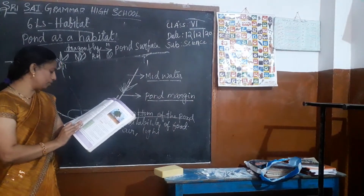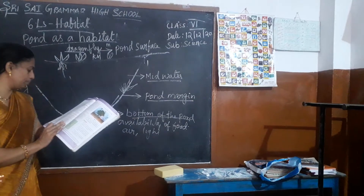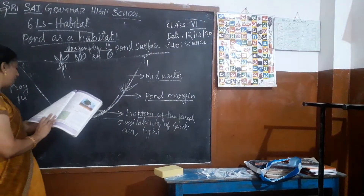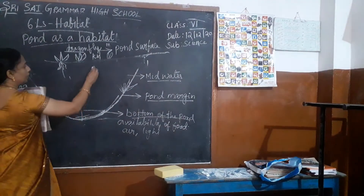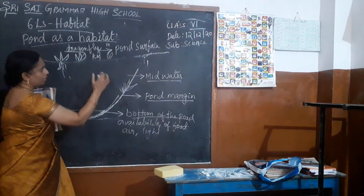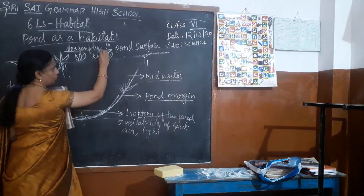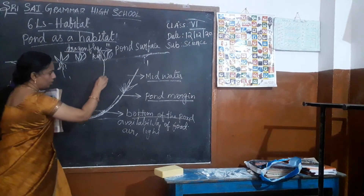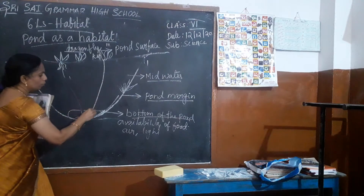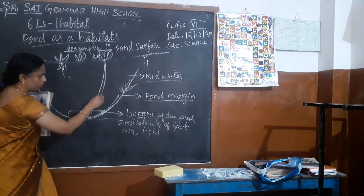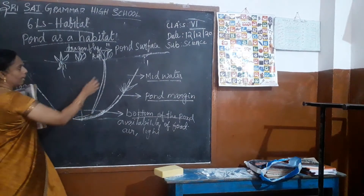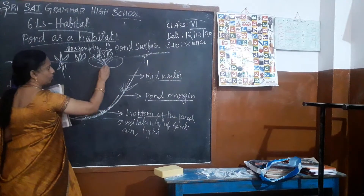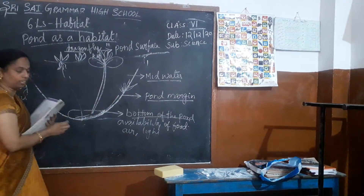Plants like pistia float on the surface completely, while those like the lotus have roots going into the soil under water. For the lotus, we can see it on the surface of the water and the roots are under the water. The leaves are also on the surface only.